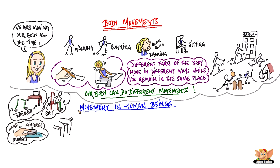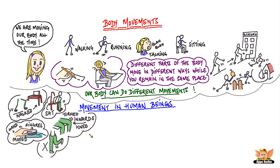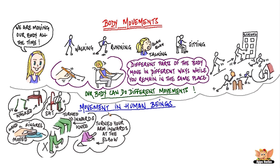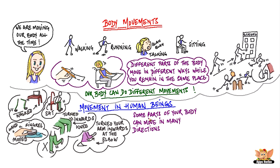When you sat on the chair, your legs turned inwards at the knee. Try turning your leg outwards — you can't do that. You sat at the table and turned your arm inward at the elbow. Have you tried turning your arms outwards? Certain parts of our body can move in many directions. Some can move in a fixed direction, while some can't move at all.